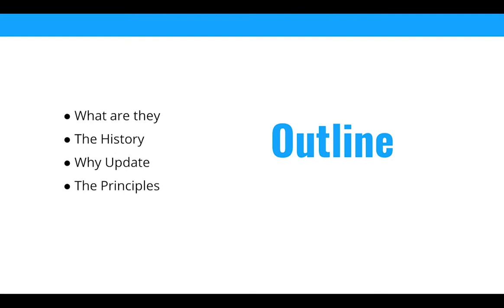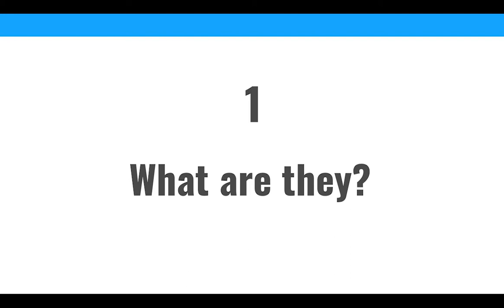We're also going to go over what the principles are. Beginning with: what are they? The access to justice tech principles are a set of principles around our justice system on how technology should be used, implemented, and built to build a more inclusive justice system. These principles are laid out mostly for courts and court systems to follow as they adopt new technologies and think about ways they can incorporate them.